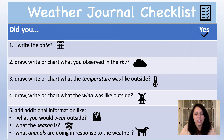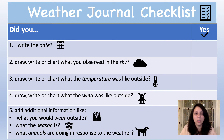The first question on this checklist asks: did you write the date? The second question says: did you draw, write, or chart what you observed in the sky? The third question asks: did you draw, write, or chart what the temperature was like outside? The fourth question: did you draw, write, or chart what the wind was like outside? And number five was any additional information you may have added.